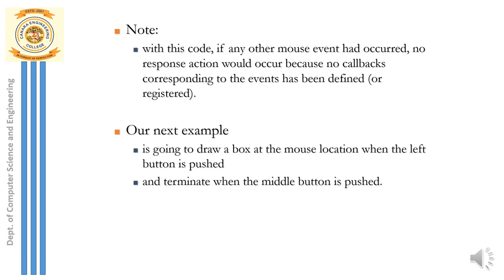Here is an example: whenever you click a mouse button, a box should be drawn at that position on the screen. A second action is defined: when the middle button is pressed, exit the screen. So there are two events — pressing the left mouse button draws a box at the clicked position, and pressing the middle button terminates the program.